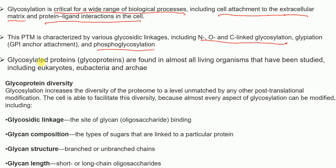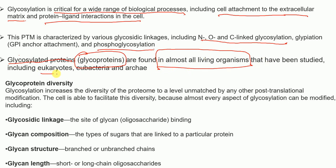Glycosylated proteins are called glycoproteins. These proteins, which have glycans or sugar moieties attached, are found in almost all organisms studied — including eukaryotes, eubacteria, and archaea. Glycosylation increases proteome diversity to a level unmatched by any other post-translational modification.